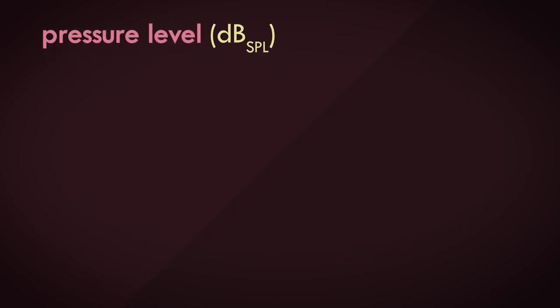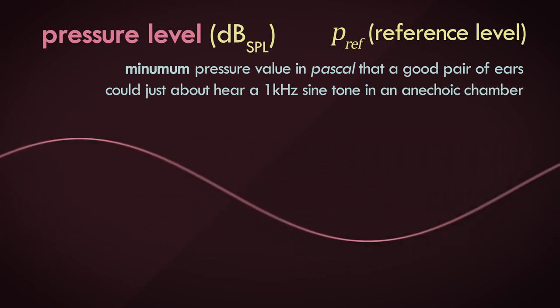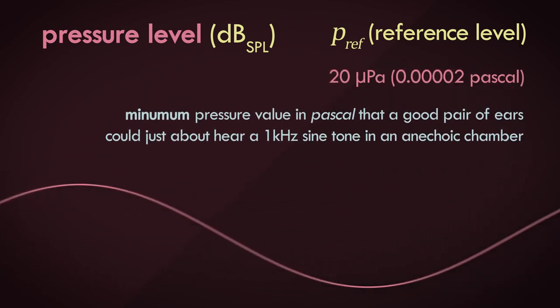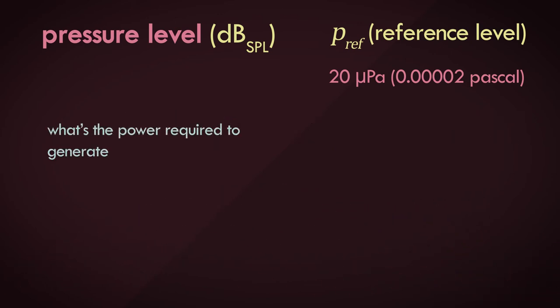When choosing the reference value for sound pressure, we chose the minimum pressure value that a good pair of ears could just about hear a 1 kHz sine tone in an anechoic chamber. This value was established to be around 20 micropascal. Now the question is, what is the power required to generate this pressure value from the same measuring distance?